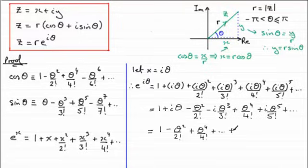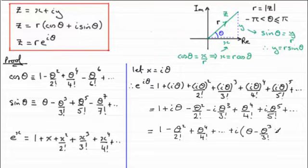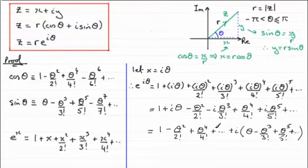For the imaginary parts, factoring out i as a common factor: i times (theta minus theta cubed over 3 factorial plus theta to the power 5 over 5 factorial), and so on. Now, the real part here is the same as the series for cos theta — the next term would be minus theta to the power 6 over 6 factorial. And the imaginary part matches the series for sine theta — if we carried it on, the next term would be minus theta to the power 7 over 7 factorial.